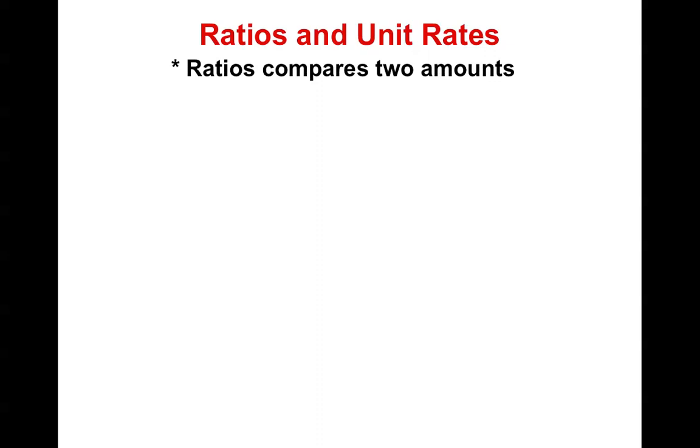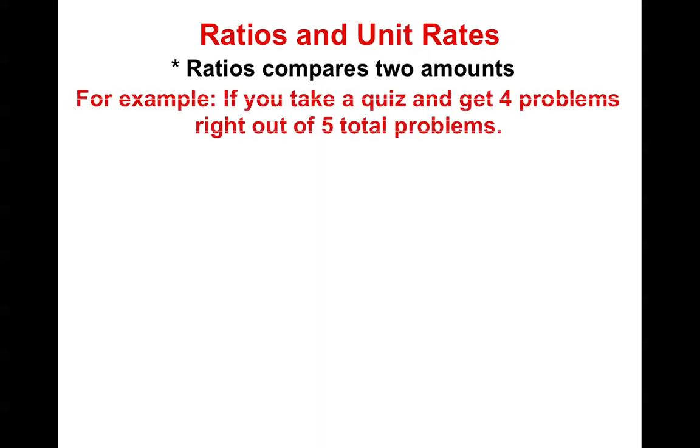So ratios are numbers that compare two amounts. So, for example, if you take a quiz and you get four problems right out of five, we have a comparison. The number of problems you got right versus the total number of problems. That's how you get your grade. You may have seen people put this on your test before. This means you got four right out of five. You could have seen it in fraction form, four out of five. They could have written it out, four out of five right. Or you got four to every five problems you did. And those are the four different ways that we can write a ratio.